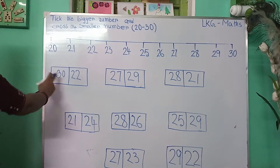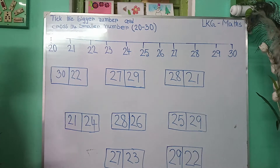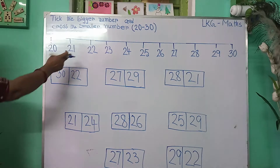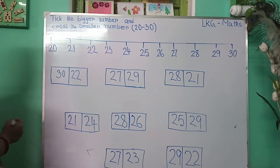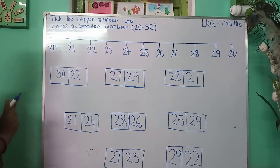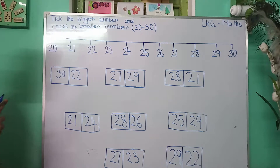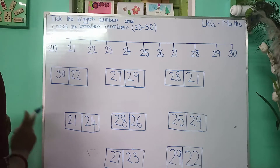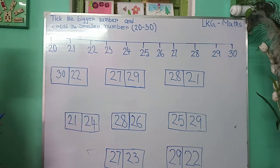Here I have written 2 numbers: 30 and 22. 30 is the last number and 20 is the first number. The last number is the bigger number and the first number is the smaller number. The last number will be the bigger number and the first number will be the smaller number.